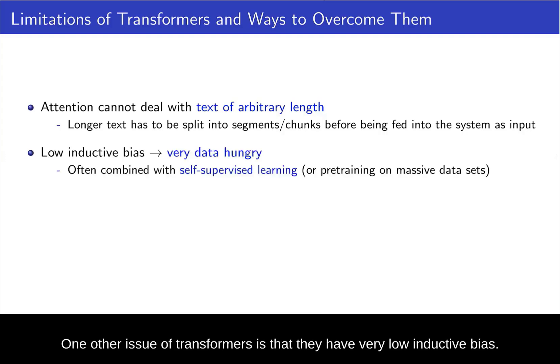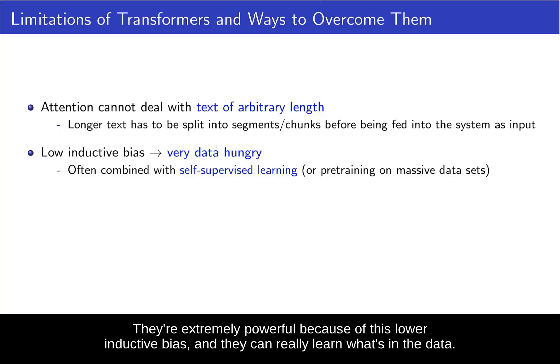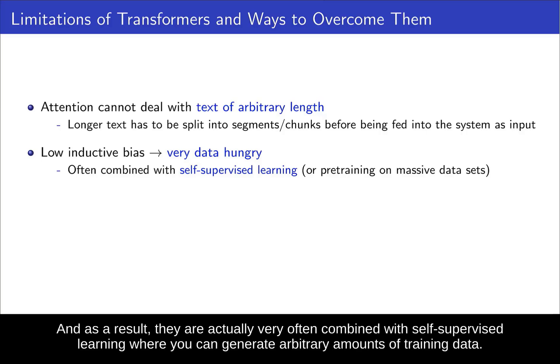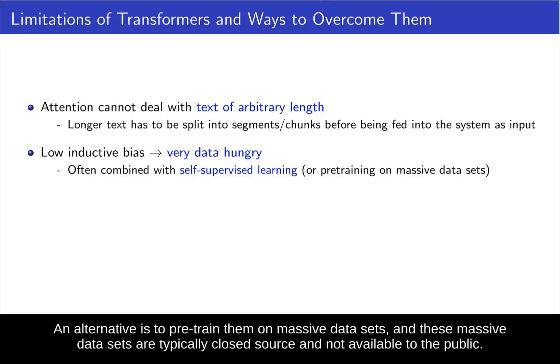One other issue of transformers is that they have very low inductive bias. This is not necessarily an issue. It can also be a blessing. They're extremely powerful because of this low inductive bias and they can really learn what's in the data. But the flip side of that is that they need a lot of data in order to train well. And as a result, they're actually very often combined with self-supervised learning where you can generate arbitrary amounts of training data. An alternative is to pre-train them on massive data sets. And these massive data sets are typically closed source and not available to the public.